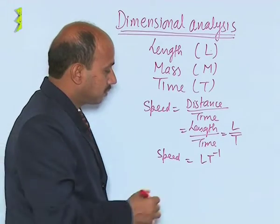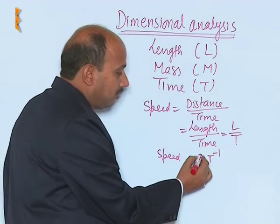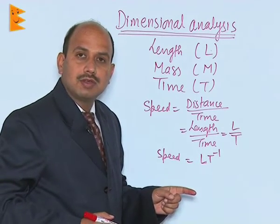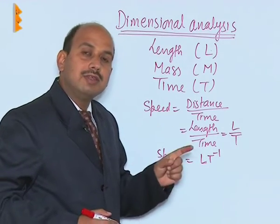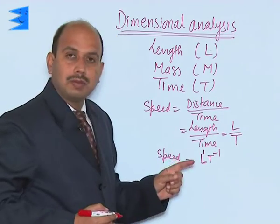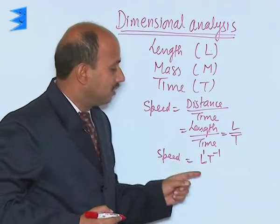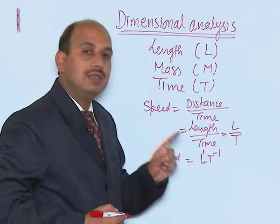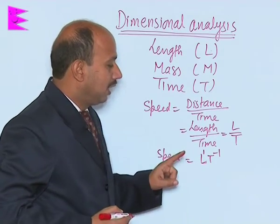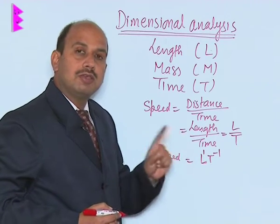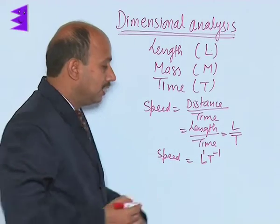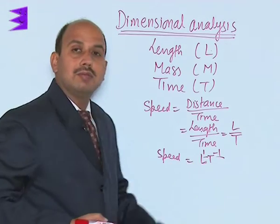Speed can be written in terms of the basic quantities by raising their powers. Here L has power 1 and the power of T is raised to minus 1. The speed can be represented in terms of basic quantities by raising their powers, and these powers are known as dimensions.